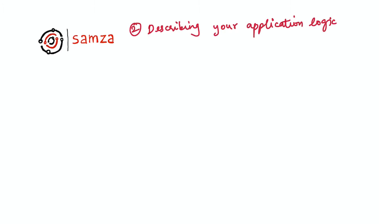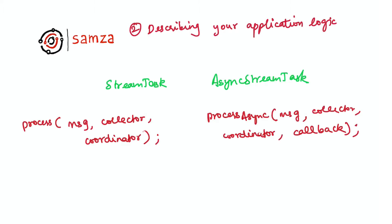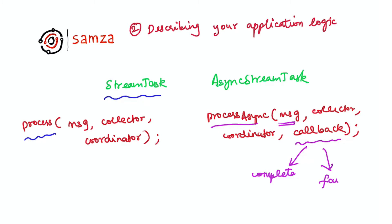There are two primary interfaces for describing your application logic. For synchronous message processing at the level of one message at a time, you can implement the StreamTask interface. In this model, Samza delivers messages to your tasks one at a time and considers the message to be processed immediately after the process call returns. For processing each message asynchronously, Samza also allows a built-in async API. In this model, you get a callback associated with each message — you can invoke callback.complete when processing is done, or callback.failure if it cannot be completed.